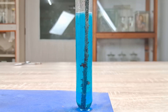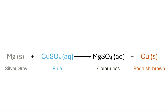The reaction can be represented as follows. According to the reactivity series chart discussed in a separate video, the more reactive magnesium metal displaces the less reactive copper from its aqueous solution in a metal-metal displacement reaction.